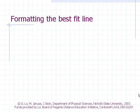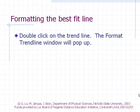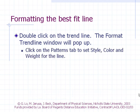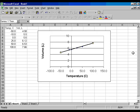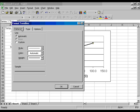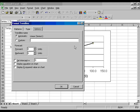Formatting the Best Fit Line: Double-click on the trendline — the Format Trendline window will pop up. Click on the Patterns tab to set the Style, Color, and Weight for the line. Click on the Options tab to do extrapolations. In the Forecast box, specify how far forward along the X-axis or backwards along the X-axis you want to draw the line.